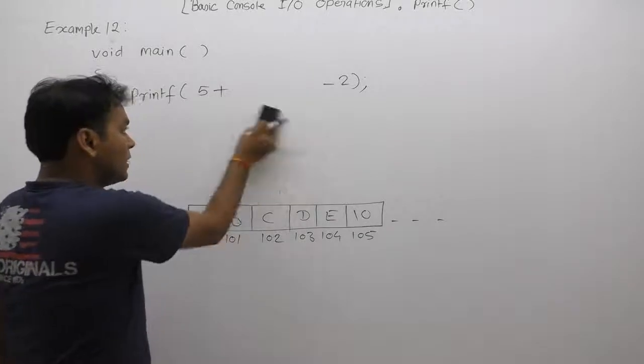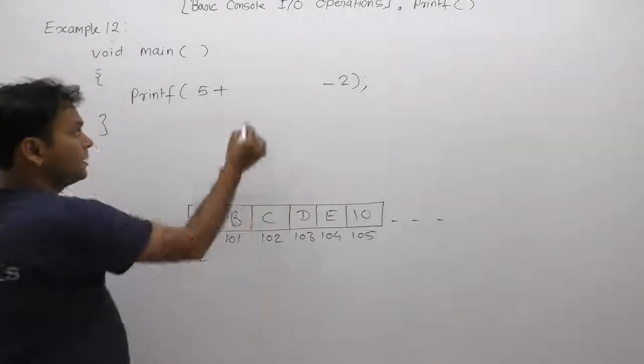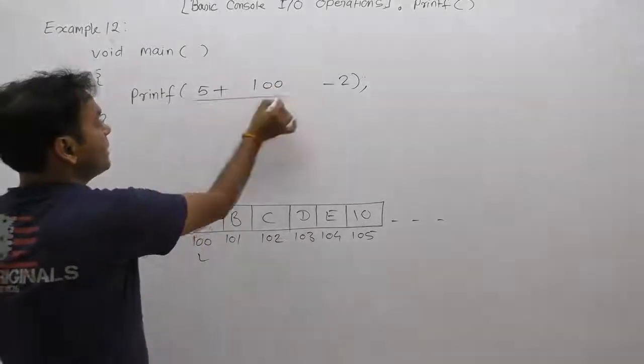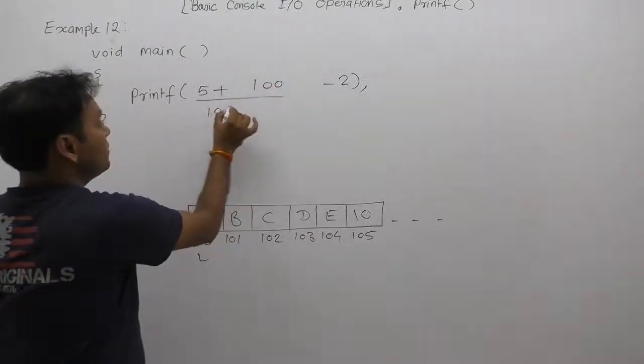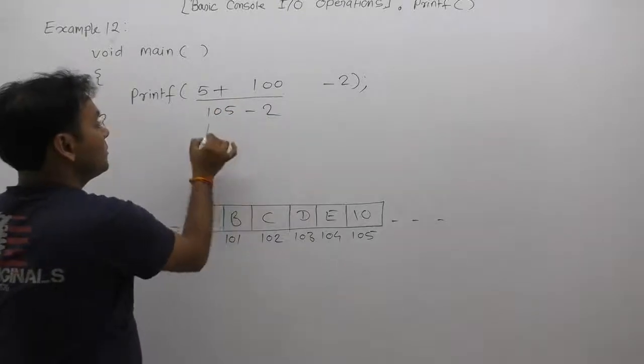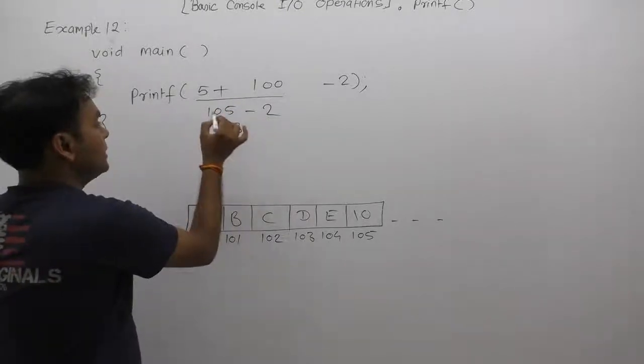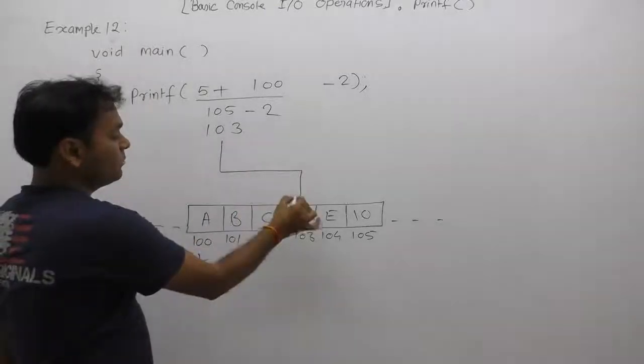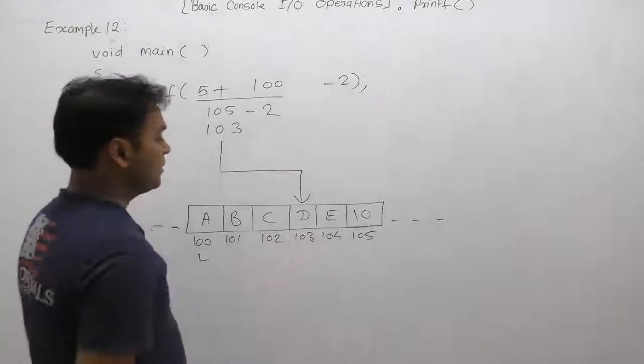According to the diagram, the base address of this string is 100. Therefore, we are replacing here as 100. Now 5 plus 100 becomes 105, minus 2 becomes finally 103. Therefore, printf needs data from location 103 onwards from that place.